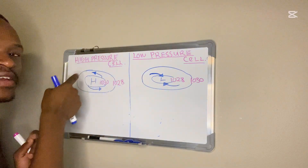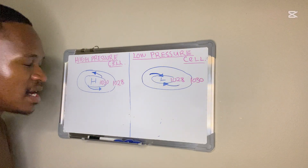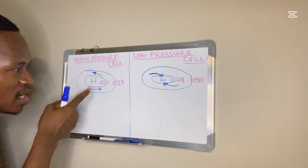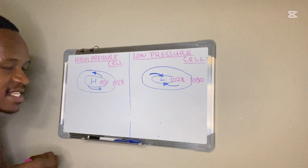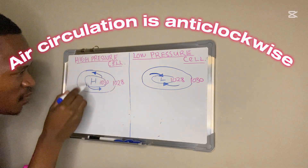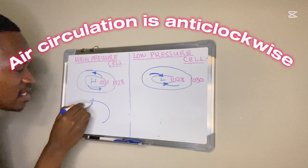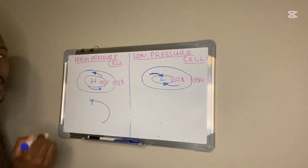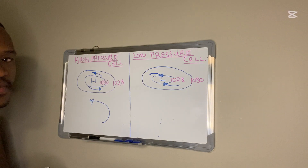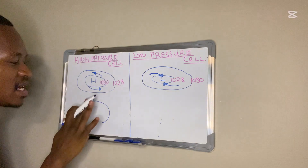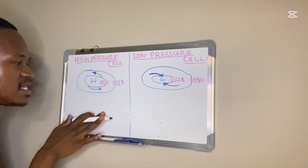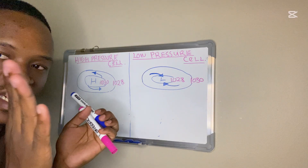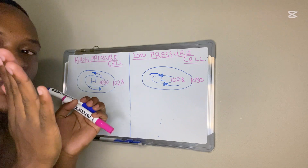If you look at the direction of the air circulation for high pressure, it is anti-clockwise. Look at these arrows — anti-clockwise. For high pressure, the air circulation is anti-clockwise and the air is diverging, moving away from the high pressure.